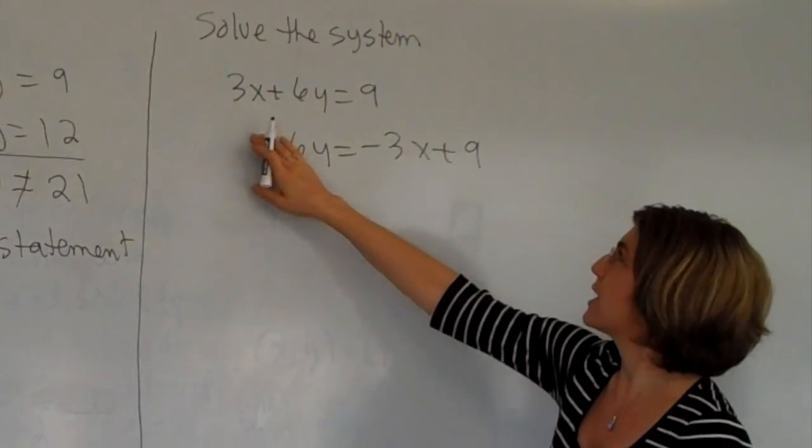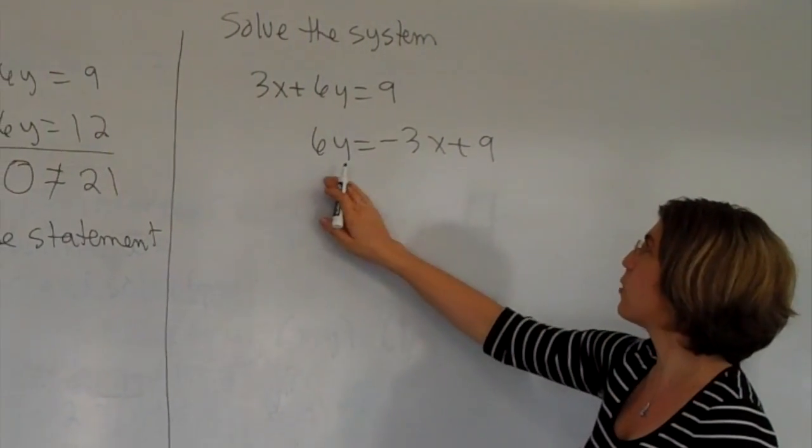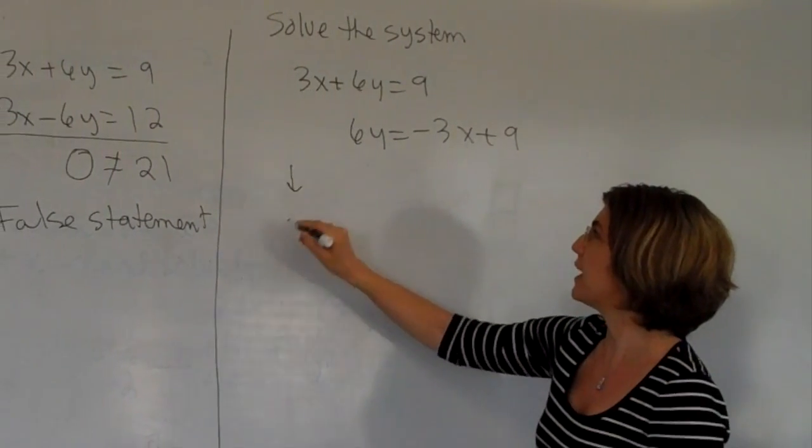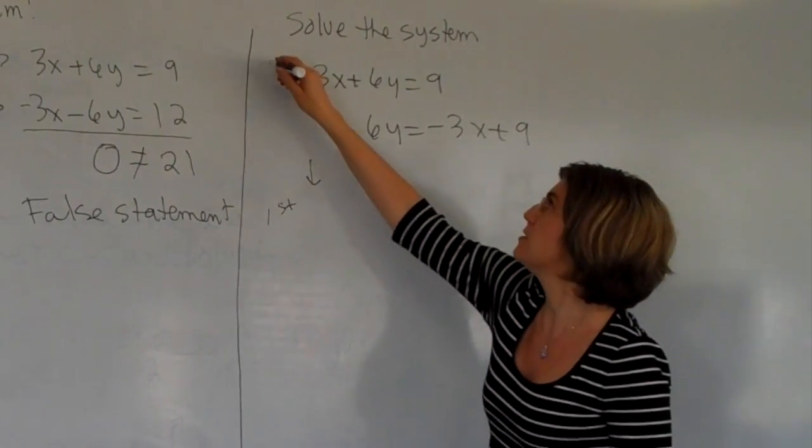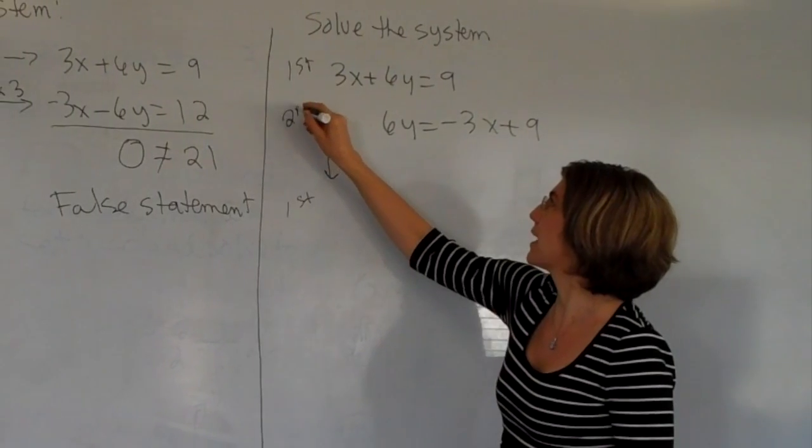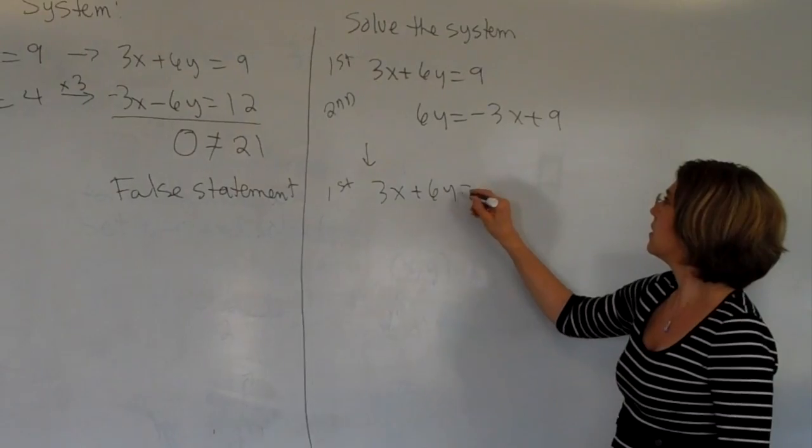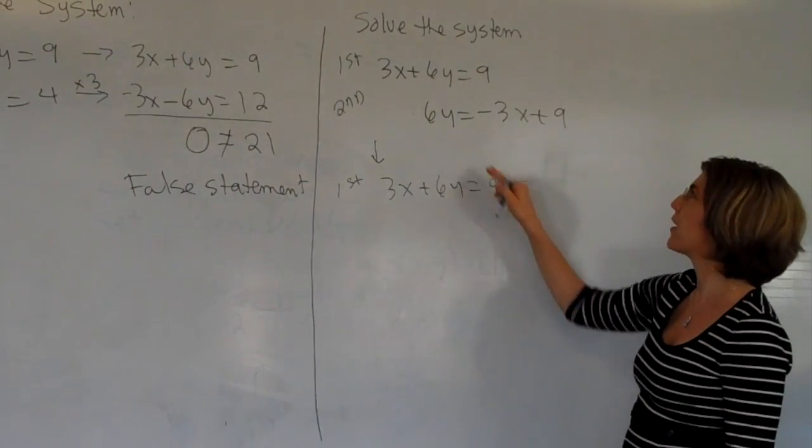So we have 3x plus 6y is 9, and 6y equals minus 3x plus 9. If we try to align these, so here's my first equation, and here's my second, so that all the x's are on top of the y's. Here's my first equation. I've just copied that over.